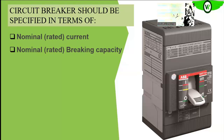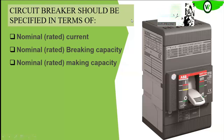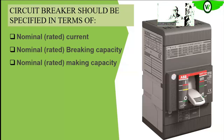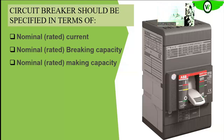The other term to understand is the nominal rated making capacity of the circuit breaker. Remember that the circuit breaker can close when the fault current is still in the circuit — it can close on the fault. If that happens, the circuit breaker should not be damaged; it should be able to withstand that fault current while making or closing the circuit breaker without causing any damage. The maximum rated making capacity is always stated in kilo amps.